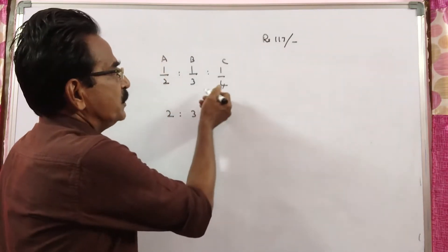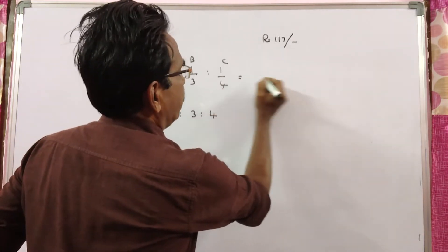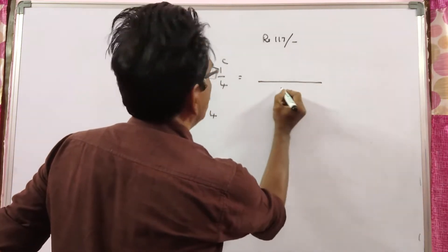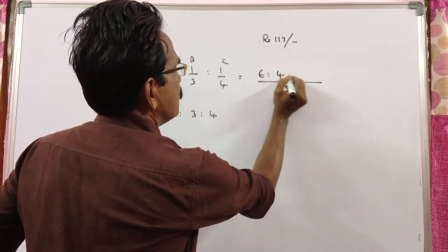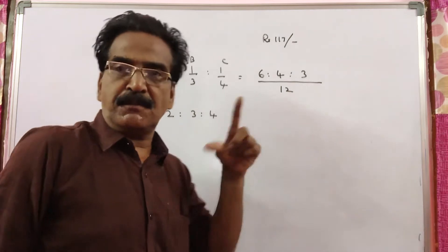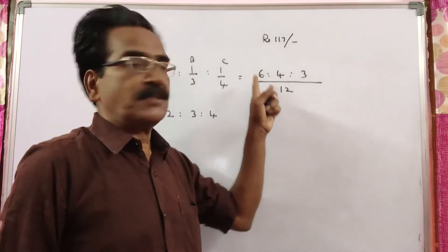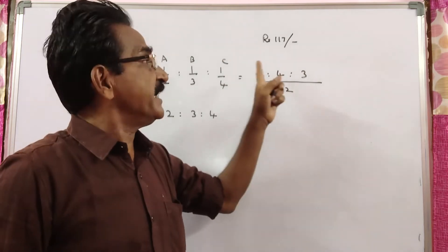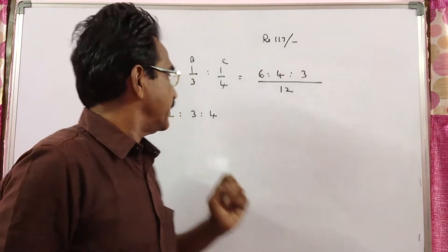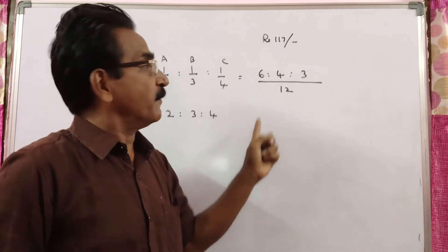See friends, 1/2 : 1/3 : 1/4, taking LCM 12, gives us 6:4:3. So actually it should be distributed in the ratio 6:4:3. So instead of dividing in the ratio 6:4:3, it was divided in the ratio 2:3:4.